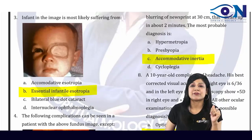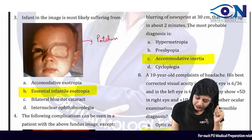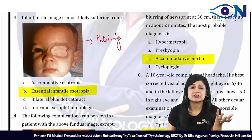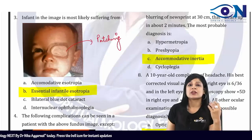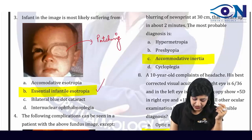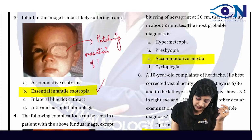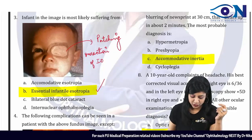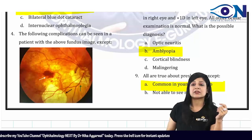Question 3: The infant in the image is most likely suffering from — this shows patching, which is used to treat amblyopia. The most common squint present in infants is infantile esotropia, which occurs due to the overaction of the inferior oblique. Therefore, the answer is essential infantile esotropia.